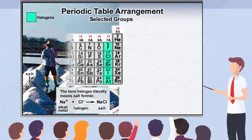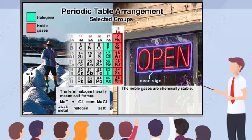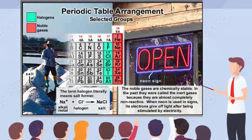Further to the right, elements in group 8A are known as the noble gases. These elements are chemically stable and non-reactive. They tend not to gain, lose, or share electrons easily because of their stable electron configurations. Since these elements are almost completely non-reactive, in the past they were often called the inert gases.